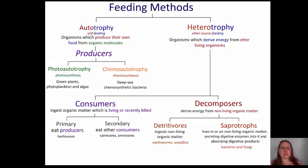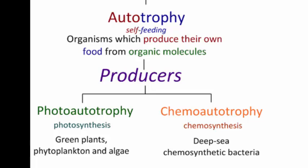There are different ways organisms feed themselves. You have two main ways: autotrophy or self-feeding, and heterotrophy or other-source feeding. Autotrophs are typically organisms that produce their own food from organic molecules, and there are two different types. All autotrophs are typically called producers. The two main types are photo-autotrophs and chemo-autotrophs.